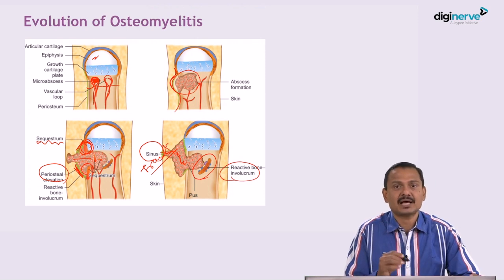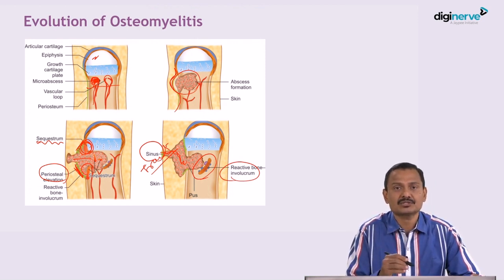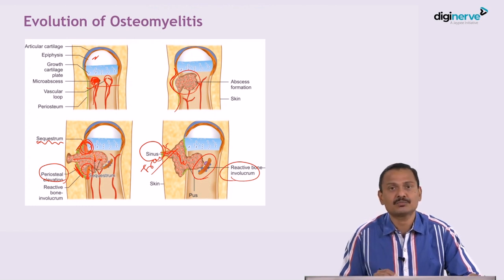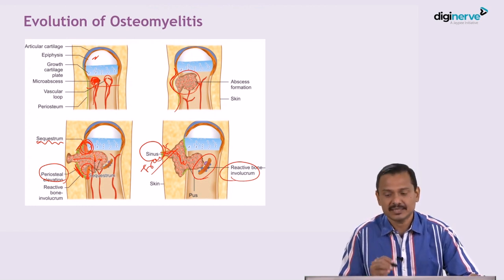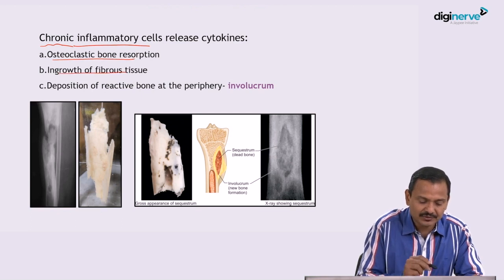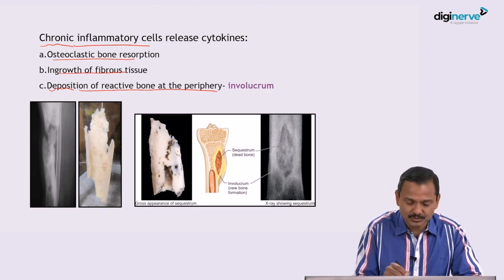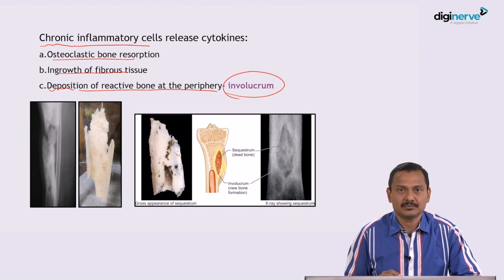With both diagrams, I hope the pathogenesis of osteomyelitis — how it evolves — is very clear. Once there is chronic osteomyelitis, there is osteoclastic bone resorption, ingrowth of fibrous tissue, and deposition of new reactive bone at the periphery, and this new bone is called as involucrum.